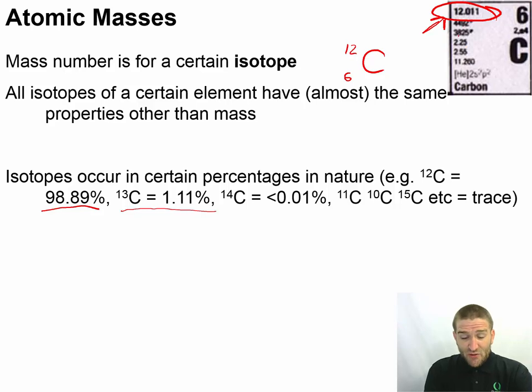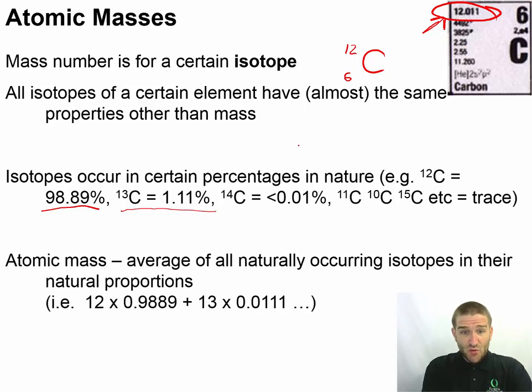Now suppose that you did a weighted average of those two things - you took the weight of 12 times the percentage in decimal form, carbon-13's weight times its abundance in decimal form, and you do that over and over for all of the naturally occurring isotopes. What you're going to find is the atomic mass that you find here on the periodic table.